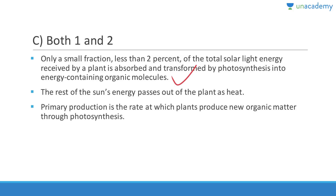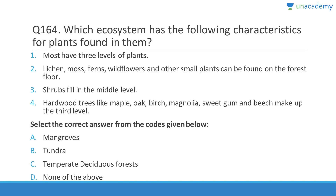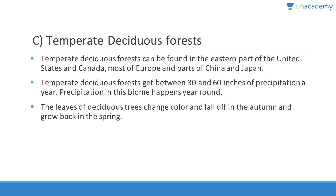Which ecosystem has three levels of plants — lichens, moss, ferns, and wildflowers on the forest floor; shrubs at the middle level; and hardwood trees like maple, oak, birch, and beech at the third level? This is the temperate deciduous forest. Temperate deciduous forests are found in the eastern United States, Canada, Europe, and parts of China and Japan, receiving 30–60 inches of precipitation a year.